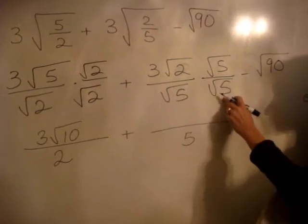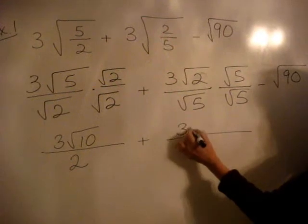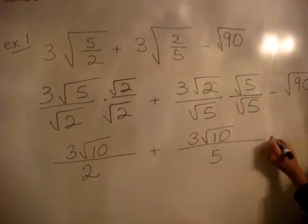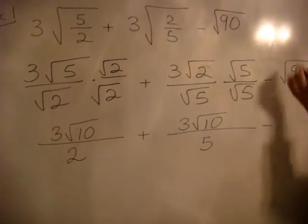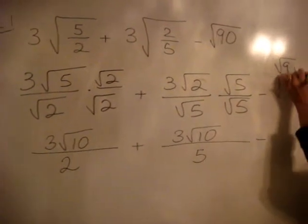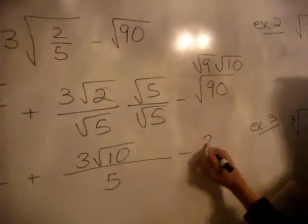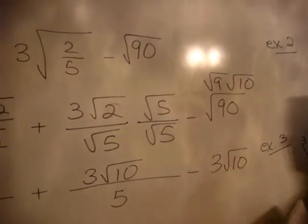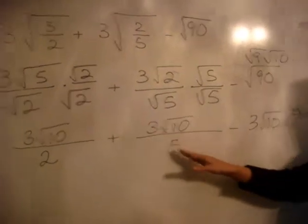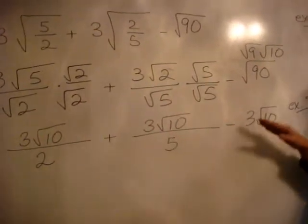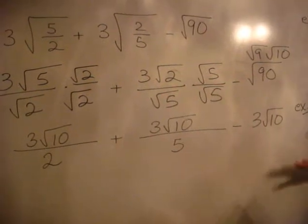Square root of five times the square root of five would be the square root of twenty-five, which is just five. So a radical times itself just frees the number. Here we're going to have three times the square root of ten. Over here we have the square root of 90, and that would be the square root of nine times the square root of ten, which is three times the square root of ten. Now these are all like terms: three over two square root of ten, three over five square root of ten, and three minus three square root of ten. So we just need to find the common denominator.